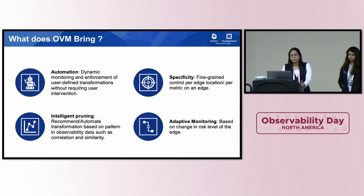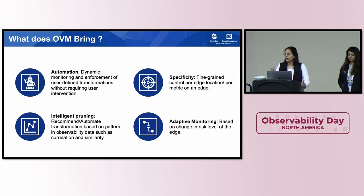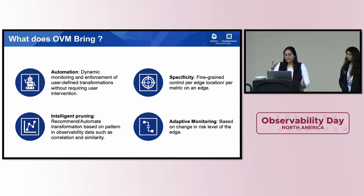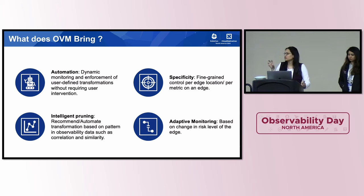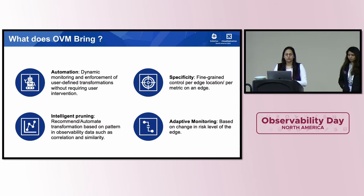Last is adaptive monitoring — based on what risk level your current edge is at, it can let you zoom in or zoom out for certain metrics, certain nodes, or certain edges. That risk level-based tuning is also something that OVM brings in.